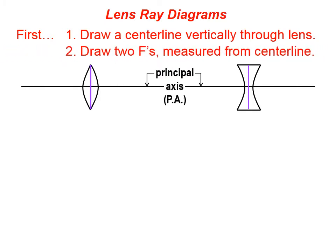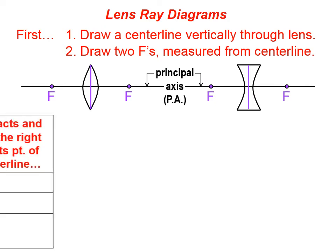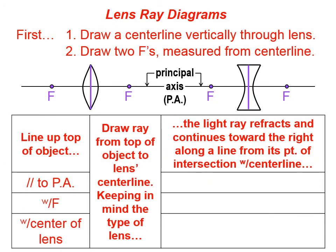Each lens needs two focal points measured from the center line that we've drawn vertically through the lens. The reason we need two focal points is because lenses have two surfaces, so you can see we've put two focal points for each of the above lenses.